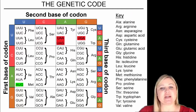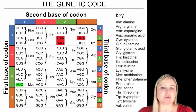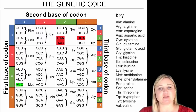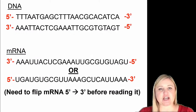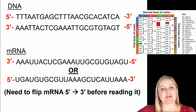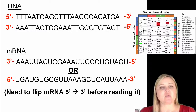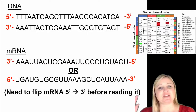Now look at your genetic code and figure out the sequence of the protein from that piece of messenger RNA we made. The ribosome binds to the very first nucleotide and moves along one nucleotide at a time until it finds the start codon. And what is the start codon? It's always AUG. So AUG is going to be the first amino acid of every protein — methionine.